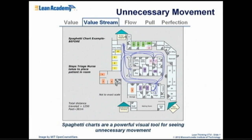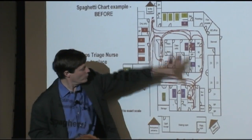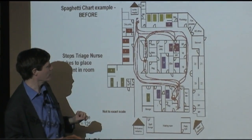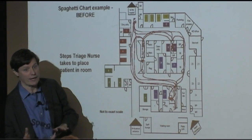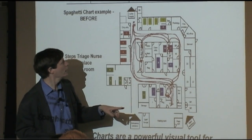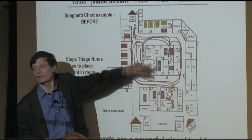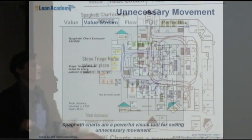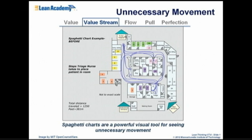Here's a really simple example of unnecessary movement from the healthcare world — this is called a spaghetti chart. It's a kind of process chart; it's not a value stream map. You have a physical layout — that's a hospital floor — and you trace something, in this case the nurse doing their work. This nurse is all over the place, and just because things are badly arranged, to get the work done she ends up walking 1,250 feet to do something trivial. That's a great visual way of finding waste in the form of movement.